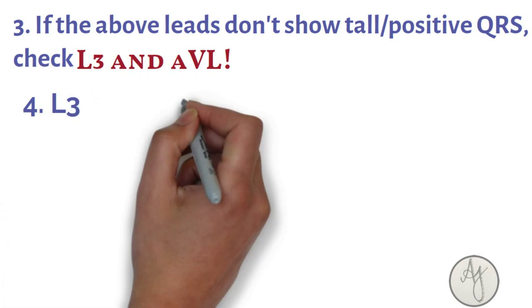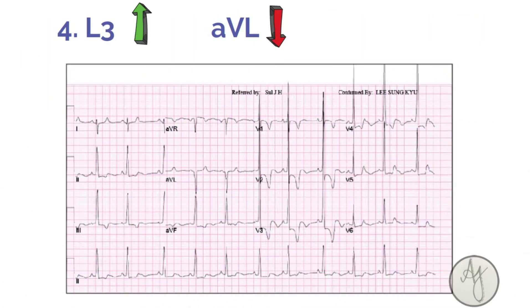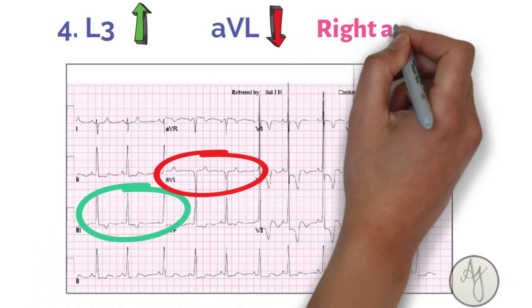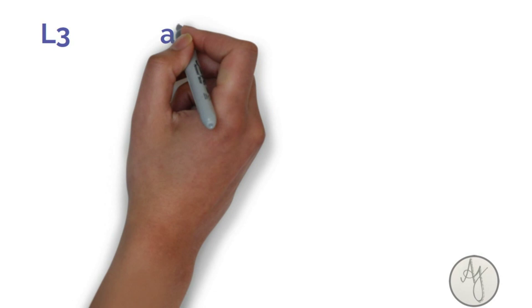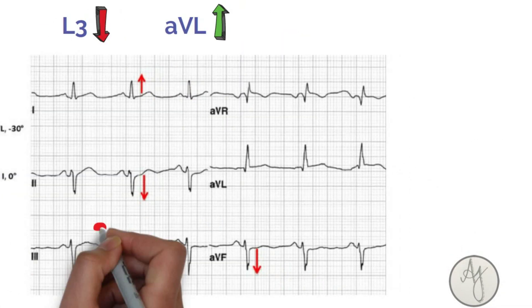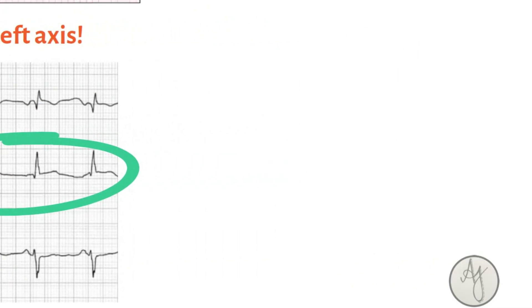Now if L3 is positive and aVL is negative, it's a right axis deviation. Similarly, if L3 is negative and aVL is positive, it's a left axis deviation.